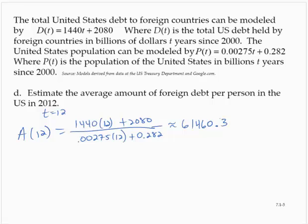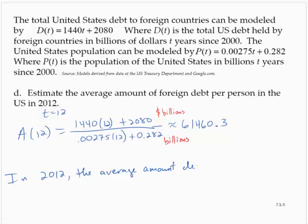So what is this telling us? The numerator was the average debt in billions of dollars, and in the denominator we had billions of people. Those billions reduce out, but we still have dollars. So the average cost per person is in dollars. In 2012, the average amount of foreign debt per person in the United States was $61,460.